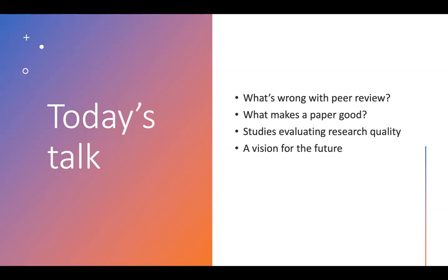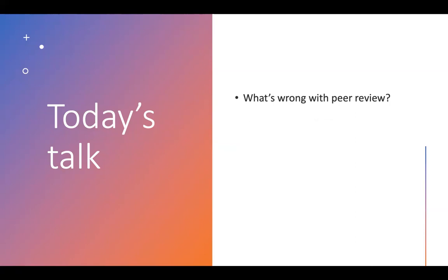Let's start with what's wrong with peer review. When I teach research methods, or even just talking to family, people want to know: when should I trust a research finding? How do I know which findings are solid? This has been especially important given all the science news during the pandemic, but in everyday life people also want to know whether to believe science news about nutrition, health, or well-being.